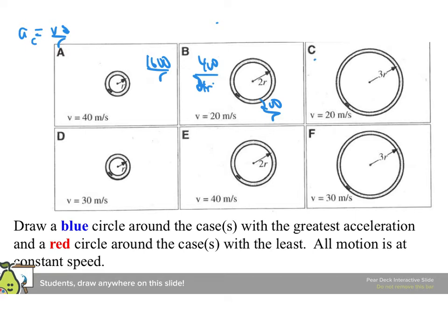And here we're going to have 400 over 3R. And here we're going to have 900 over 1R. This is going to be 1,600 over 2R, which is 800 over R. And here we're going to have 900 over 3R, which is going to be the same as 300 over R.